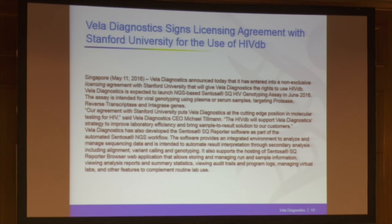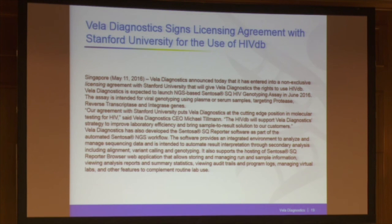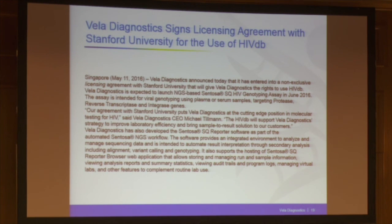Last but not least, for HIV sequencing we compare sequences to specialized databases. The most important database for the time being is still the Stanford database, and Vela has taken a license from Stanford, working closely with Stanford scientists on evaluation of the assay to align our sequence information with their database. There is also now a new feature where you can use the FASTQ files to compare your sequences to other databases like the REGA database, the French database, and the German database. With that, I hand over to the next speaker — Christophe Rodriguez from Paris, France — who will report on his experience with the assay. Thank you for your attention.